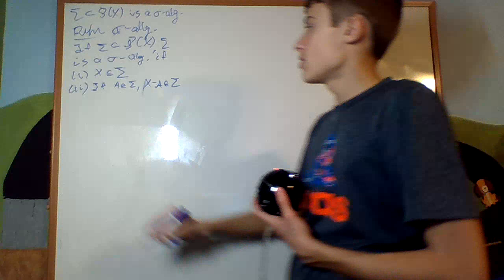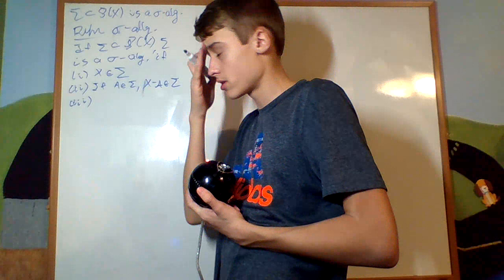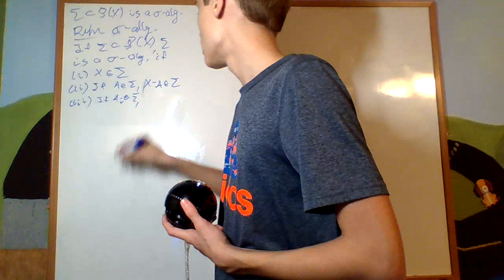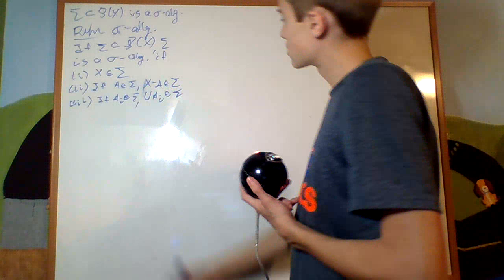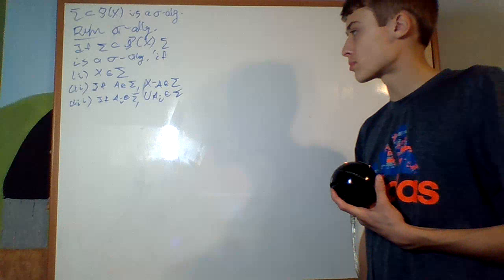Third property: closed under countable unions. If A_i is an element of sigma for each i, then the union of the A_i's is an element of sigma. This is just assuming it's countable.